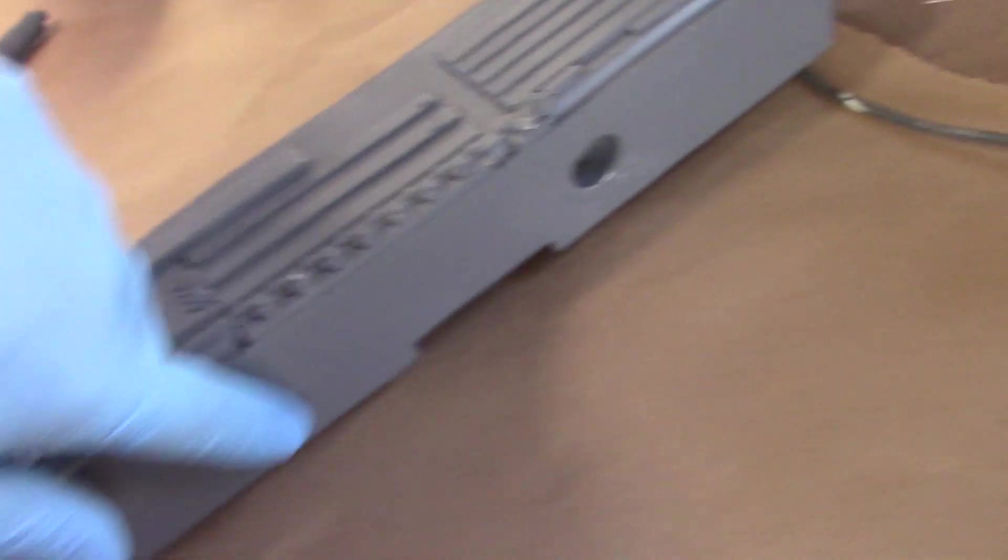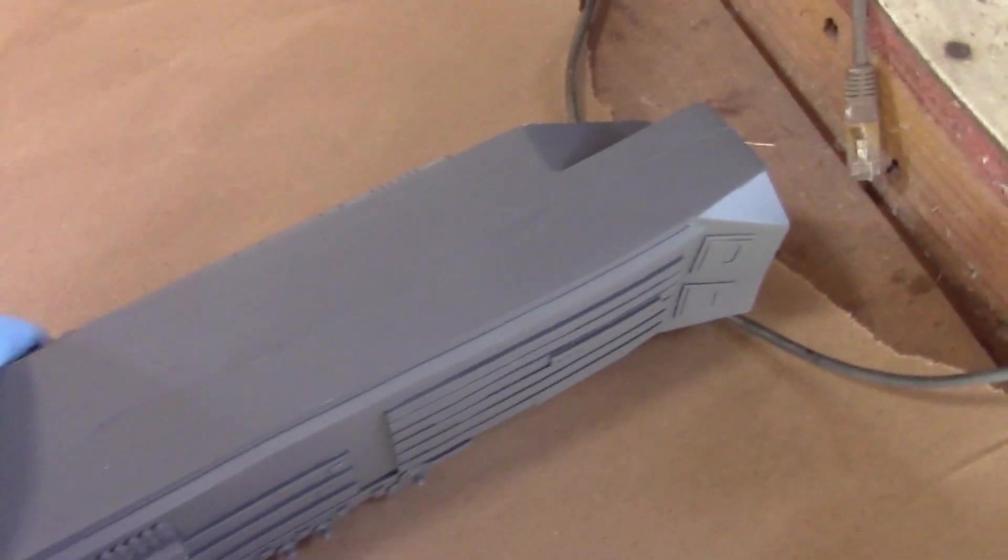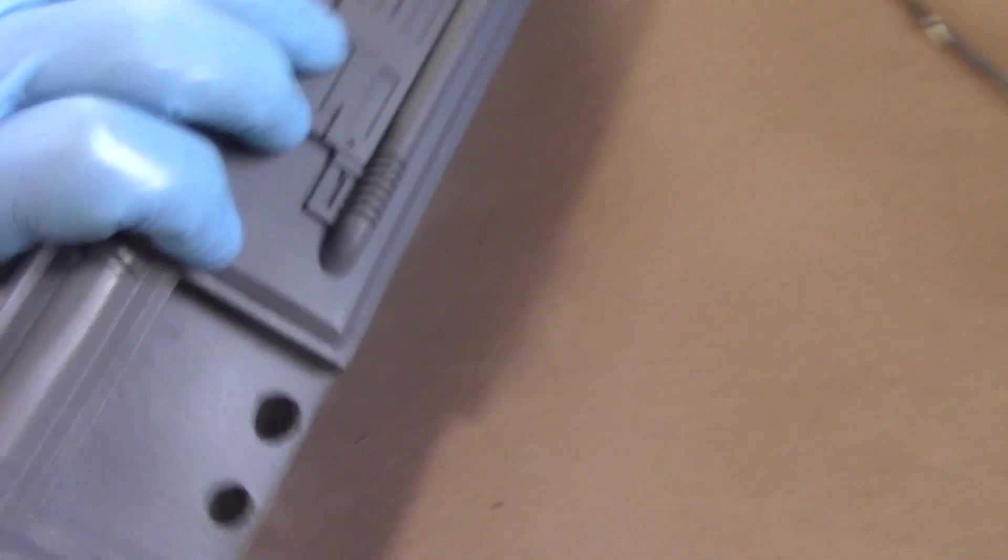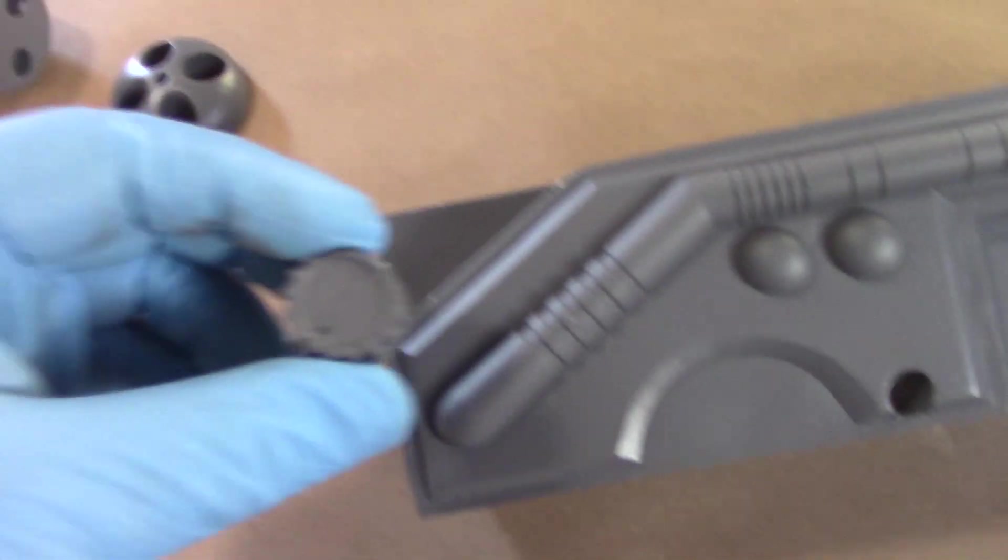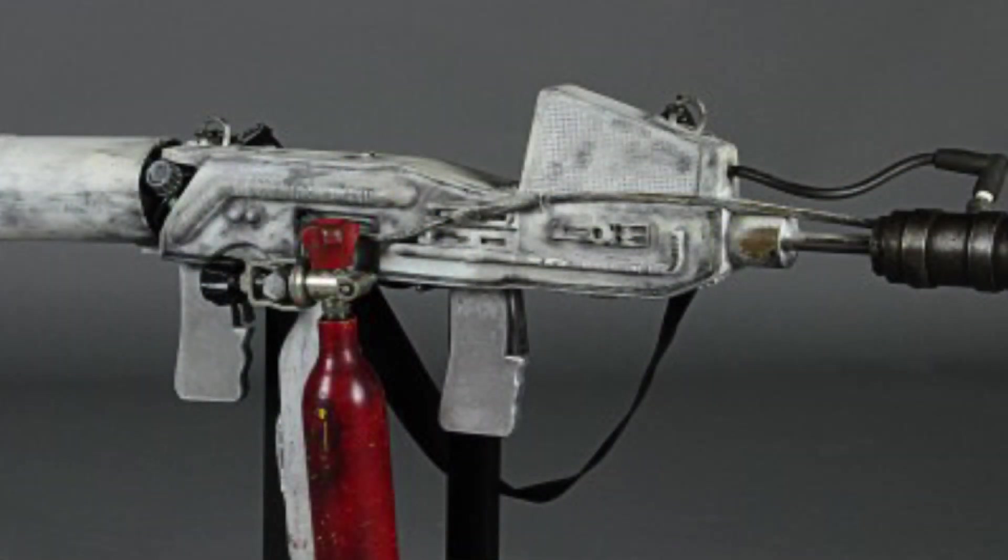This is not cleaned at all. The seam line is still here, but it's actually just barely there. It'd be a very easy model to clean. On this side, I added a knob. That's accurate to the film-used version. There's a little knob right there.